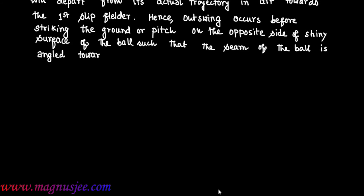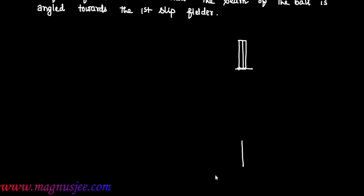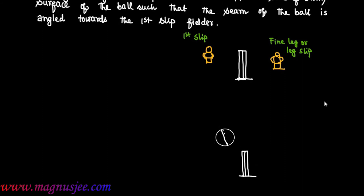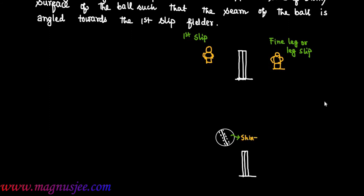Such that the seam of the ball is angled towards the first slip fielder of the right-handed batsman. We can draw wickets at the batsman end and at the bowler end. The first slip fielder is with respect to the right-handed batsman and this is the leg slip fielder. The cricket ball will be thrown in air with the seam angled towards the first slip fielder, and the non-seam side is on the outward end of the right-handed batsman.